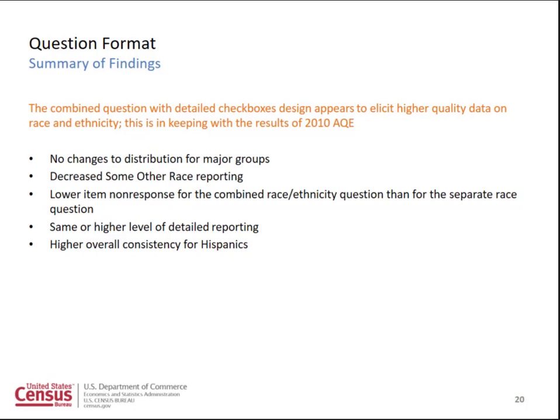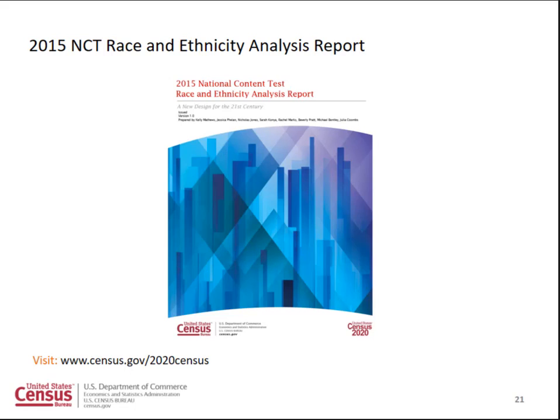Let me summarize the findings on the question format. We find that the combined question with detailed check boxes appears to elicit higher quality data on race and ethnicity, keeping with what we saw in the 2010 AQE. Specifically, we saw no changes to the distribution for major groups, a decrease in 'some other race' reporting, lower item non-response, same or higher level of detailed race reporting, and a higher overall consistency for Hispanics. I encourage you to go to our website later today to see the whole report with results for the other dimensions we tested.